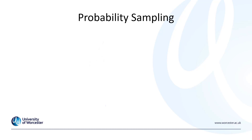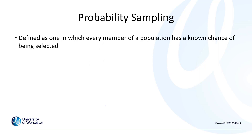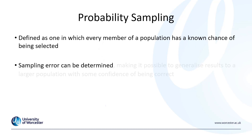Probability sampling is defined as one in which every member of a population has a known chance of being selected. Because we know the probability each respondent has of being selected, we can work out sampling error, making it possible to generalize results to a larger population with some confidence of being correct. If we know how big the population is and we randomly select a given amount within our sample, we can work out statistically the potential probability of error. The more of the population we sample, the smaller the potential for error.